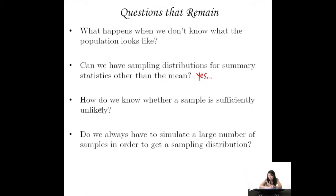And then the third unanswered question is, how do we know whether a sample is sufficiently unlikely? So far we've been just eyeballing it. We look at it and we say that seems unlikely. Two percent, that seems unlikely. Five percent, that seems unlikely. Ten percent, that seems more likely. We're just making a judgment call. But how do we know whether it's truly unlikely or it's just our opinion?